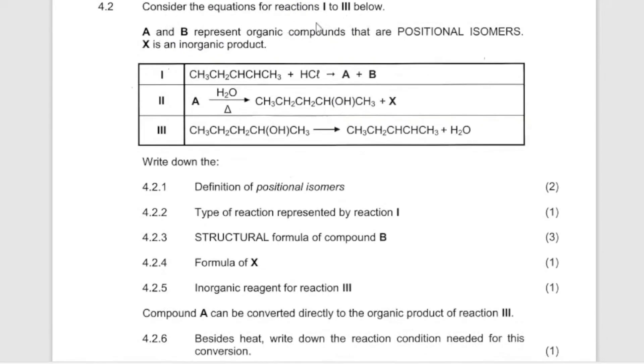Consider reactions 1 to 3. We call this reaction synthesis manufactured. A and B represent organic compounds that are positional isomers, meaning that it is the same molecule, same structure, just the position of the substituent is different. In other words, one is a major product and one is a minor product. Define positional isomers: structural molecules with the same molecular formula but different position of the substituents or functional group.